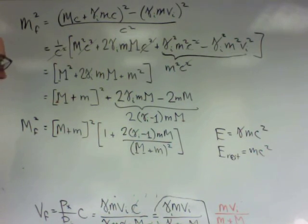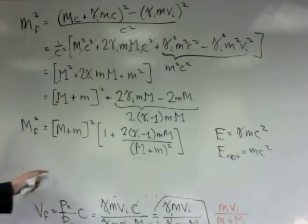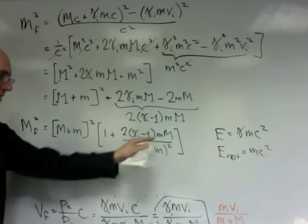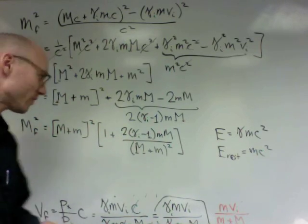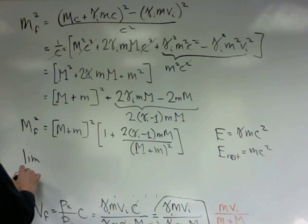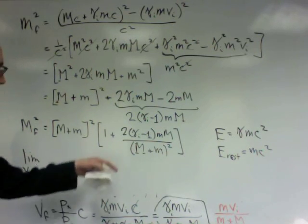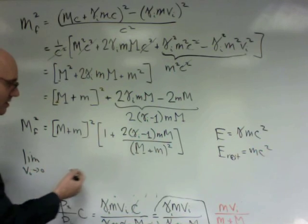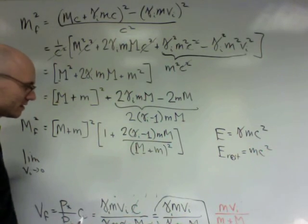So this is the correct relativistic description for the final mass. It's bigger than the sum of the masses by this. But now I want to do one more thing, which is I want to take the limit as the initial velocity goes to zero of this expression. The initial velocity going to zero, meaning I want to take the non-relativistic limit.